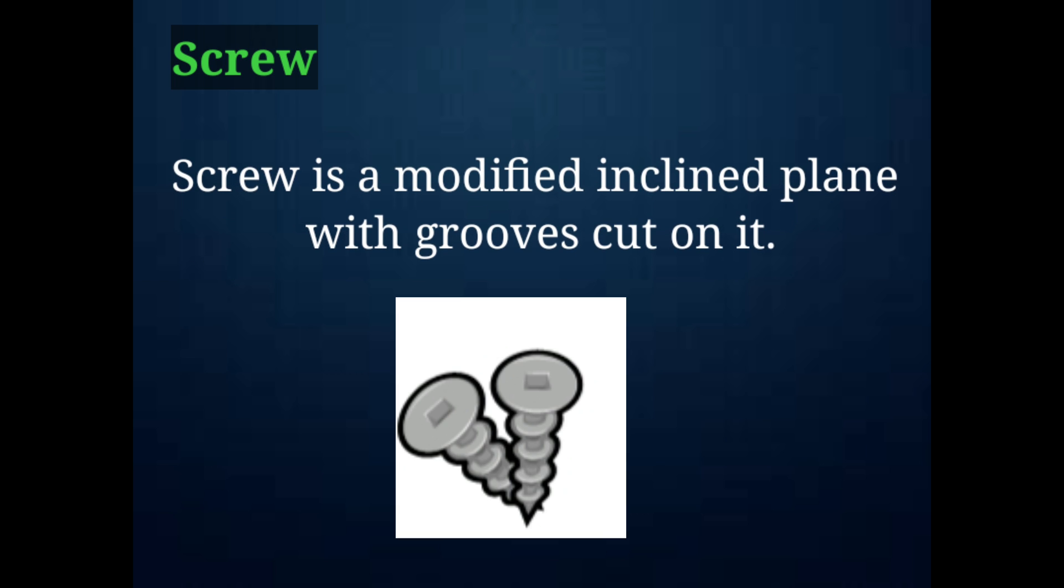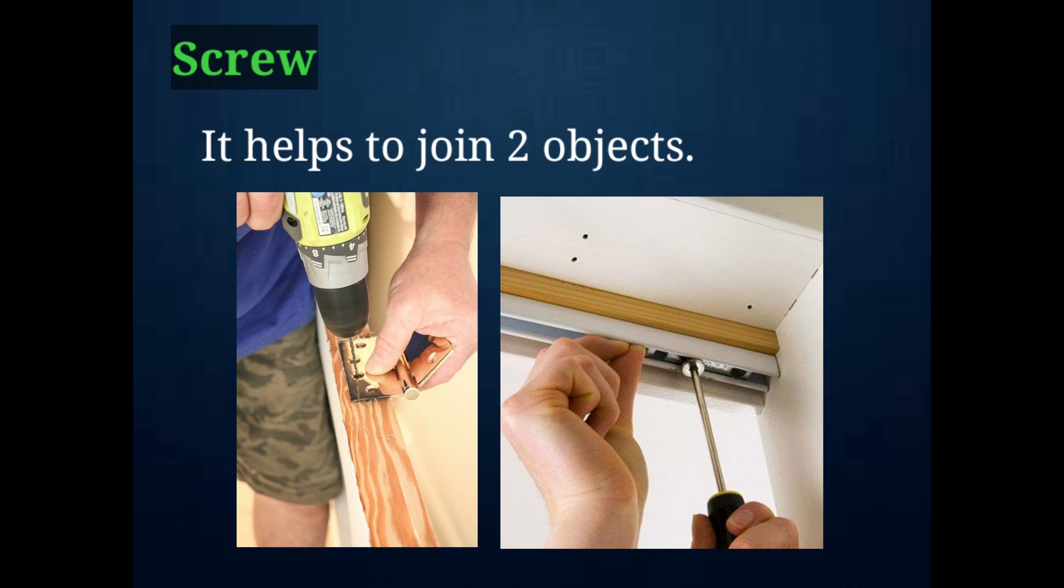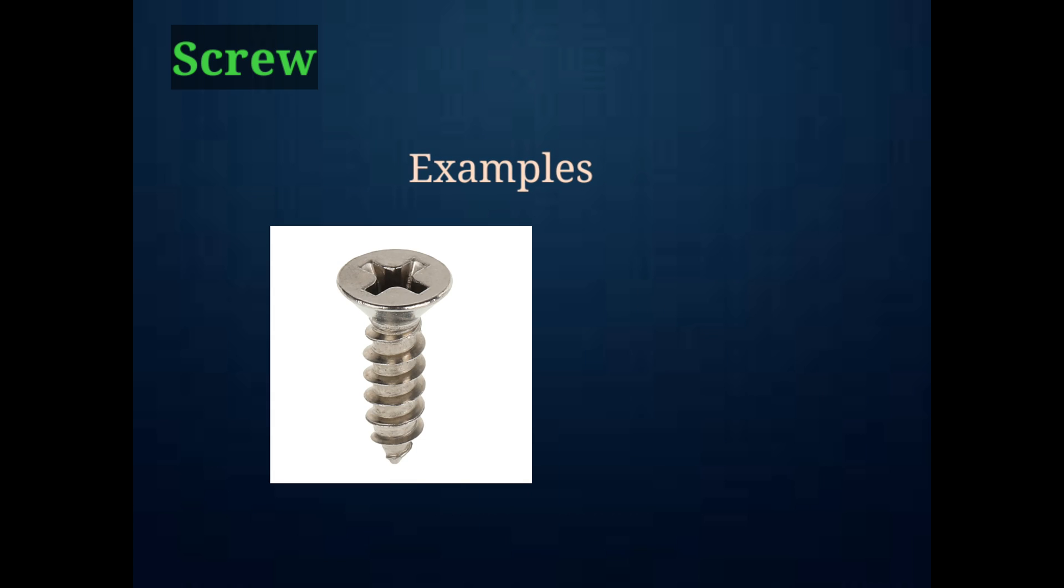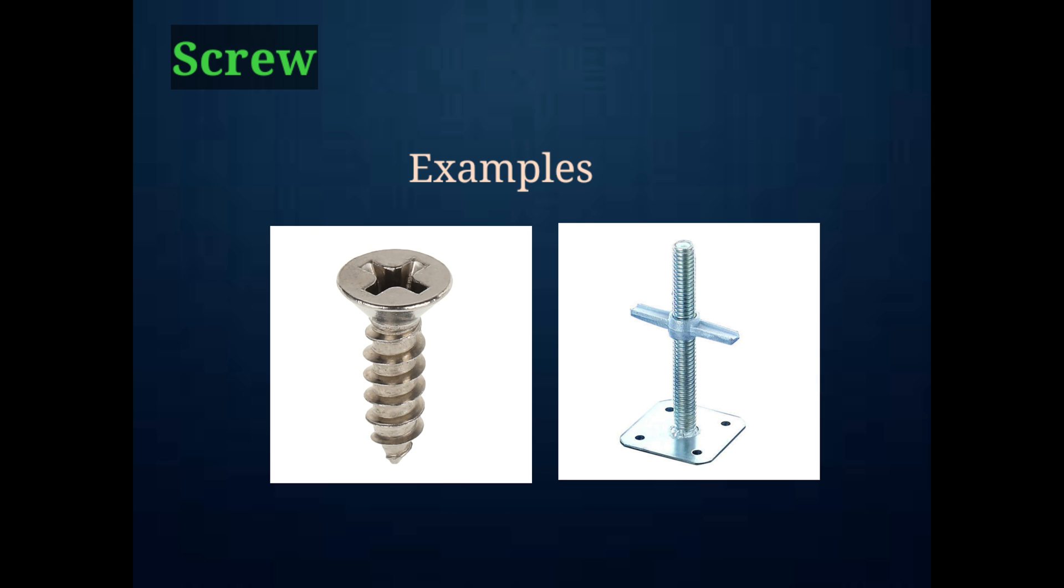A screw is the modified inclined plane with grooves cut on it. It is a cylinder with an inclined plane wrapped around it. It helps to join two objects. Some examples of a screw are screw nail, jack screw, etc.